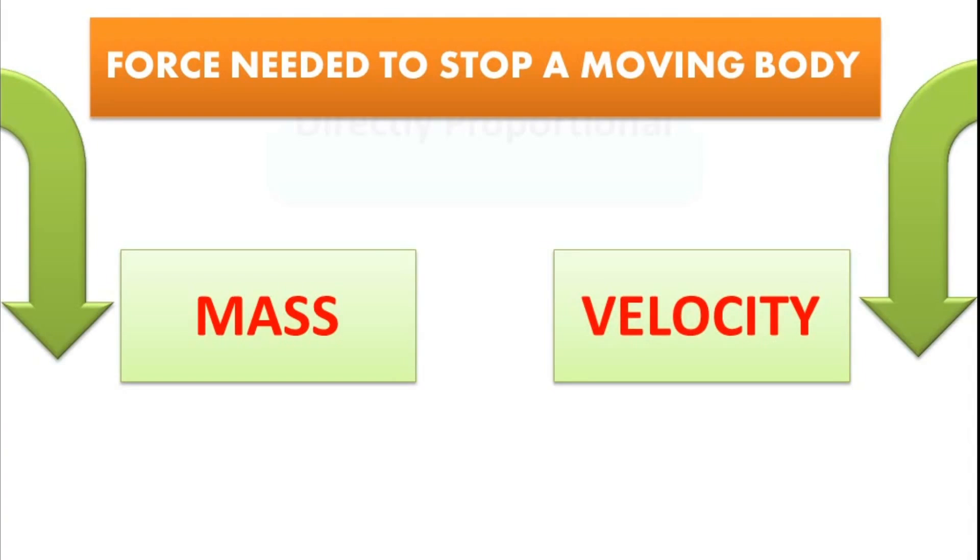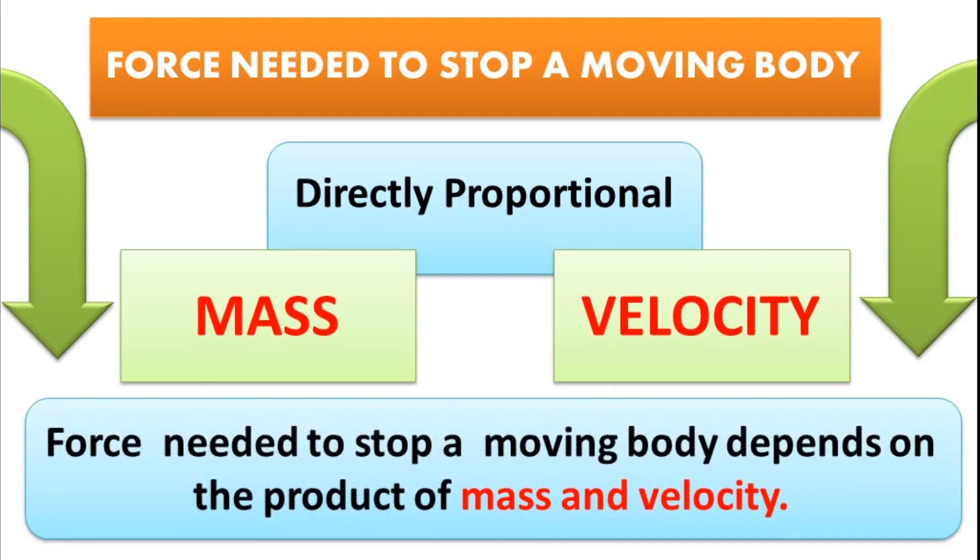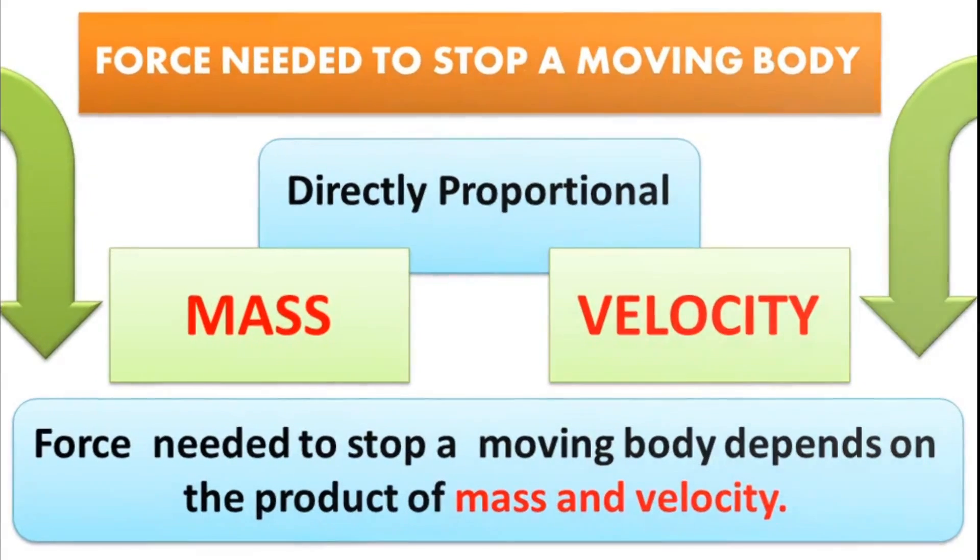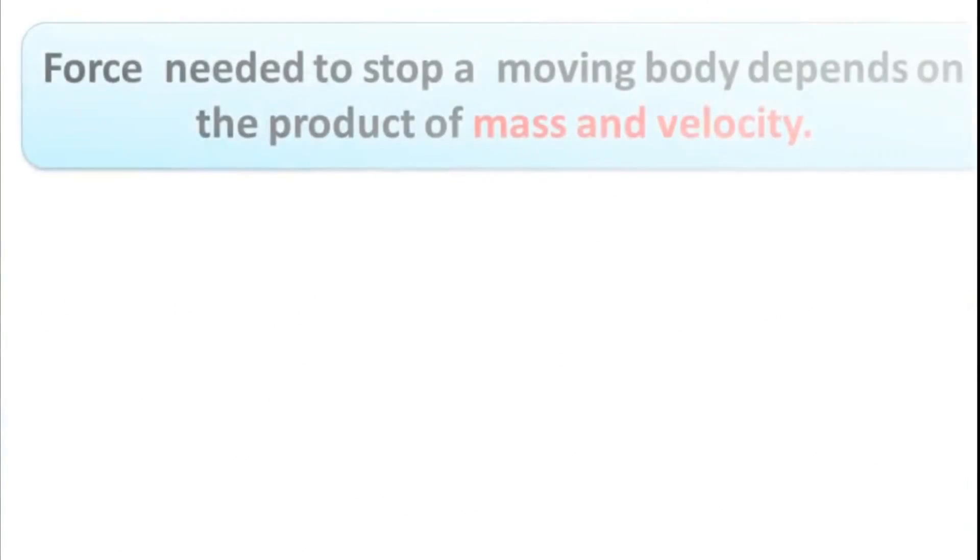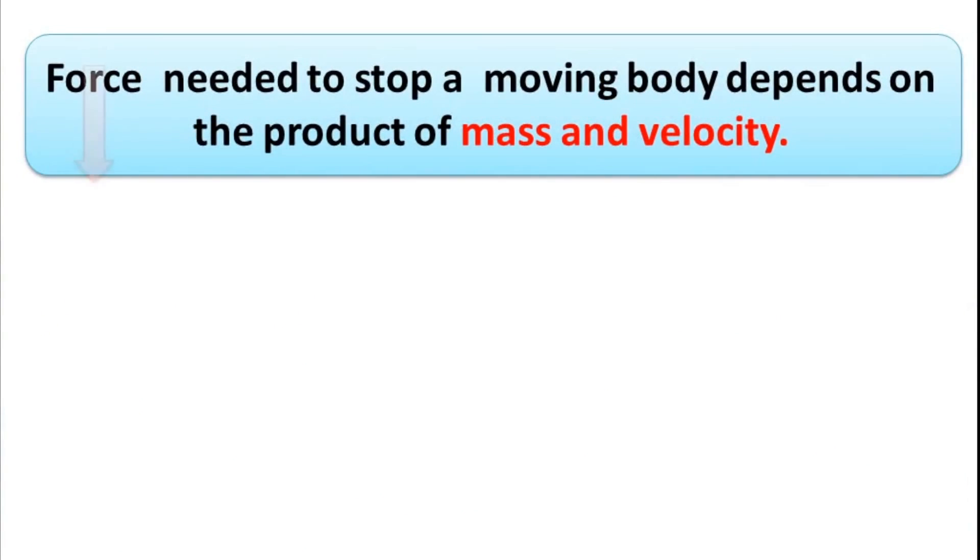And both are directly proportional. That means more the mass, more force is needed to stop. And more the velocity, more is the force needed to stop it. So, force needed to stop a body depends on the product of mass and velocity. This force that is needed is called as linear momentum.